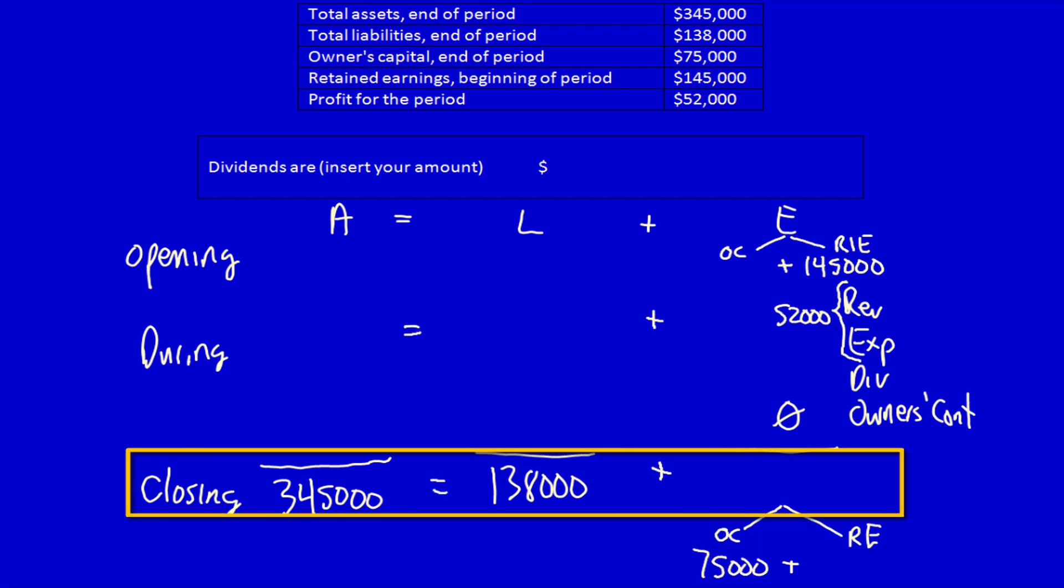Alright, let's solve for the closing first. $345,000 equals $138,000. To solve for equity, we're going to take $345,000 subtract $138,000 and that equals $207,000.